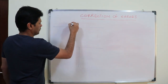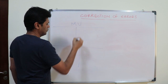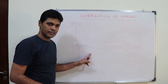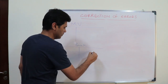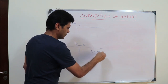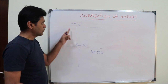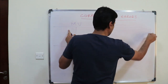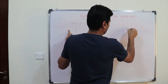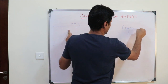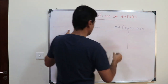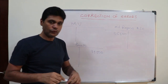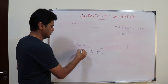So how do you rectify this? The transaction is you purchased a motor vehicle. The amount was correctly credited to the bank account — thirty-five thousand five hundred. But it was not debited to the motor vehicle account; instead it was recorded in the motor vehicle repairs account — thirty-five thousand five hundred. That is the error.